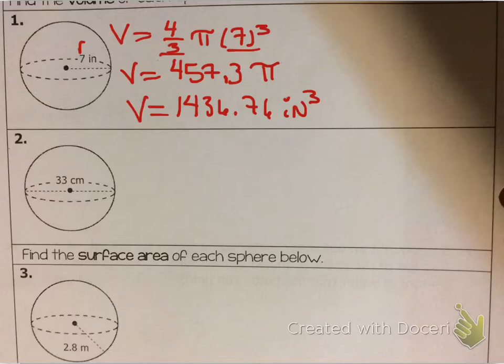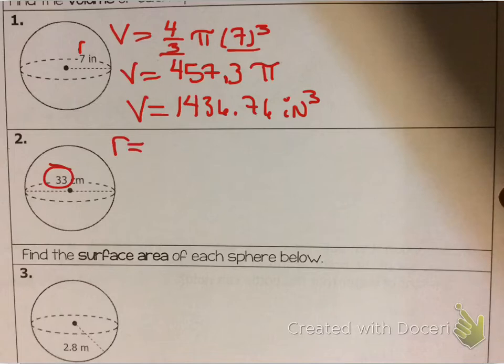All you need is the radius. So if they give you a diameter of 33, divide by 2 — my calculator would normally give it as a fraction, so I change it to make sure I know the radius is 16.5.